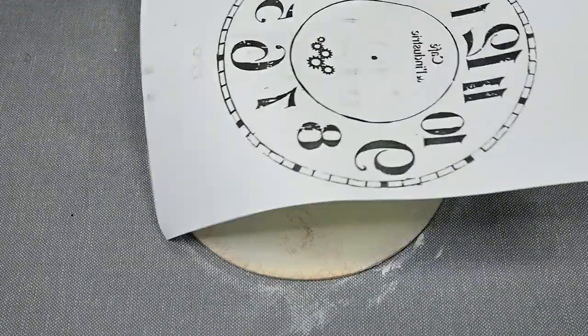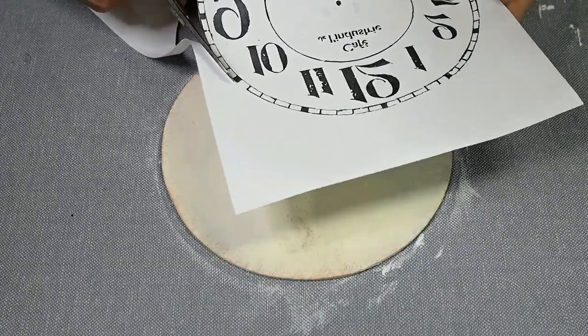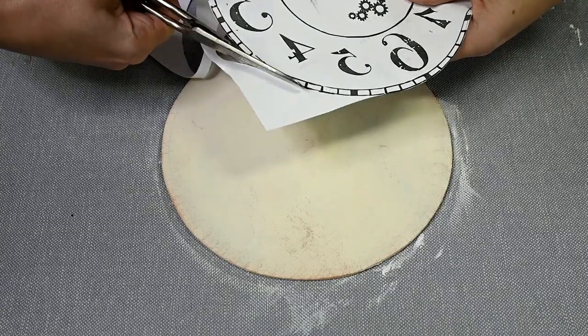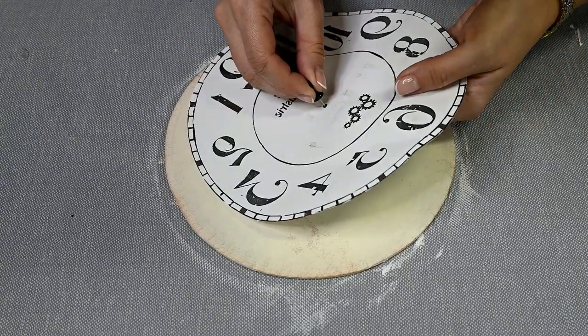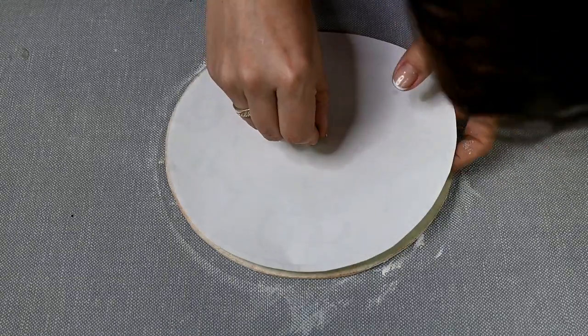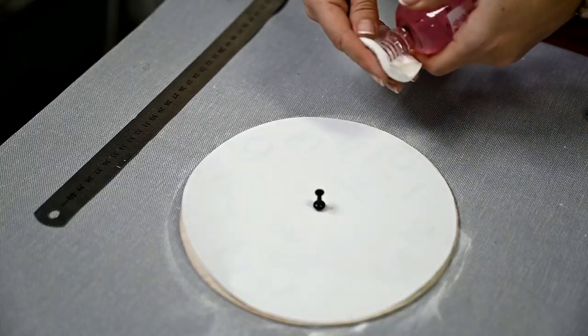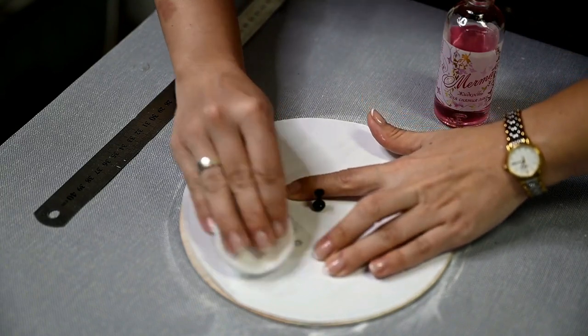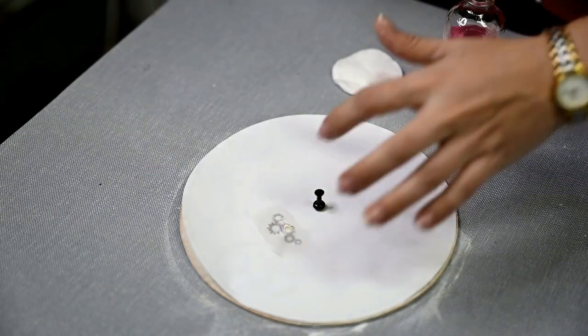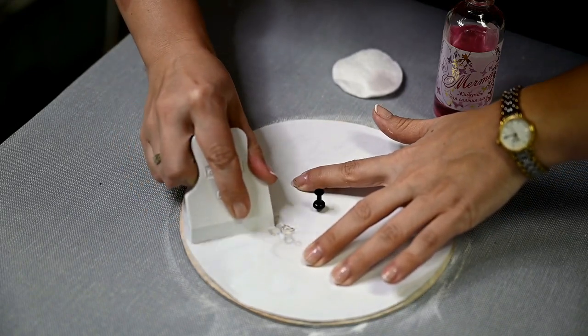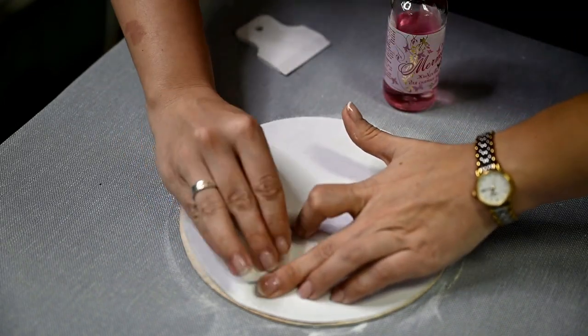Then I'm taking a printout of the dial, combining the centers of the picture and the base and pinning it together. Then I'm wetting the paper with nail polish remover, or better with acetone, and pressing it firmly. You can even rub it with some plastic card or spatula.